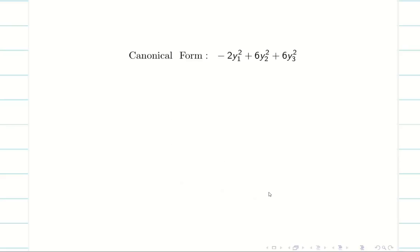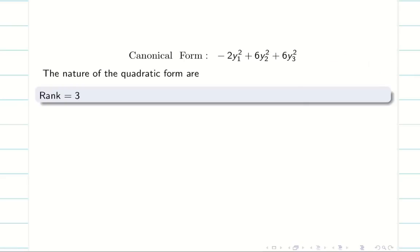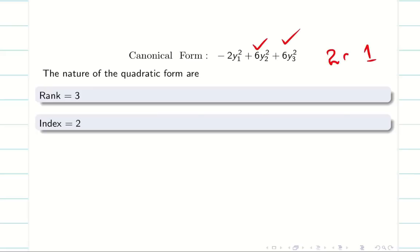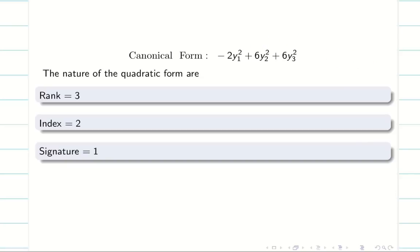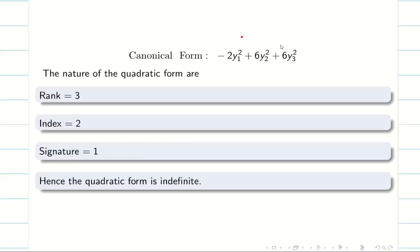So next we have to find the nature, index, rank and signature for the given quadratic form. So we take the eigenvalues into account. All the three eigenvalues are non-zero. So rank is 3. And we have two positive eigenvalues. So index is 2. And the number of positive eigenvalue is 2. And negative eigenvalue is 1. When I take the difference between them, my signature is 1. And we have one negative eigenvalue and two positive eigenvalues. So I don't want to worry about the third one. I will say the nature immediately as indefinite.